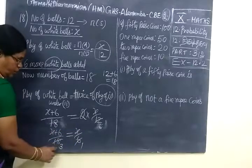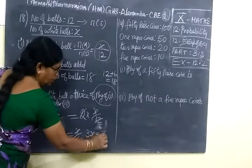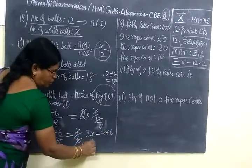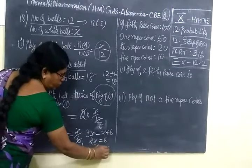Cross multiply. 3 into x, 3x. So 3x equal to x plus 6. Plus 6, so minus x. So 2x equal to 6. So x equal to 3.